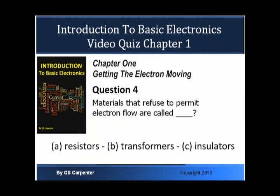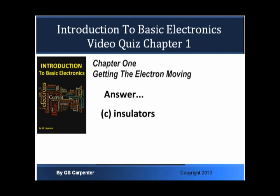Okay, here's Question 4. Materials that refuse to permit electron flow are called: A, Resistors; B, Transformers; or C, Insulators. Answer: C, Insulators is the correct answer.